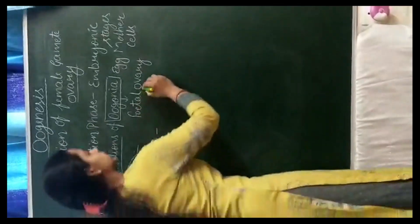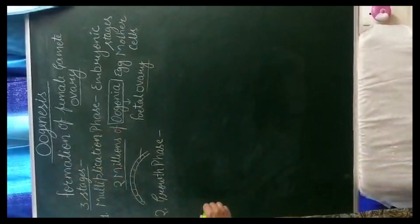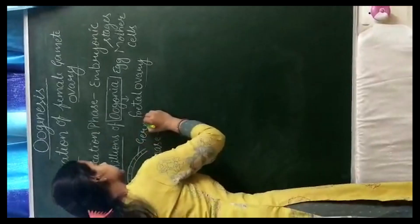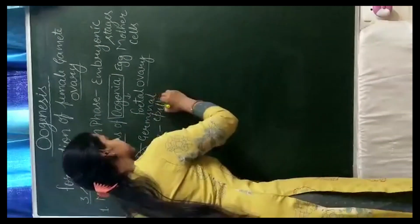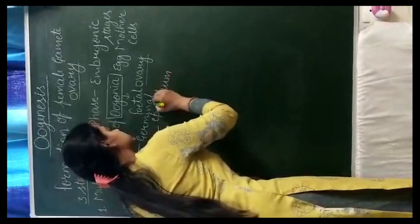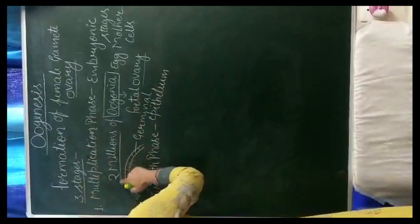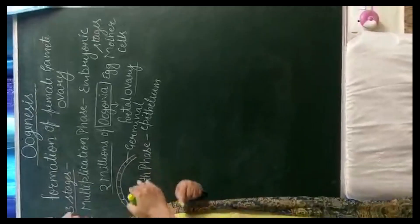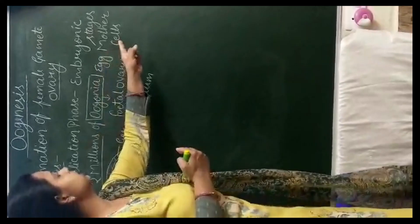We have studied about the structure of the ovary. In the inner lining of the ovary, germinal epithelium is present. These germinal epithelium cells are the female germ cells. They are the oogonia — female germ cells. During the multiplication phase, the germ cells divide repeatedly by mitosis and form oogonia, or egg mother cells.